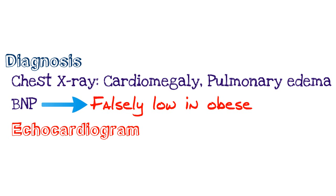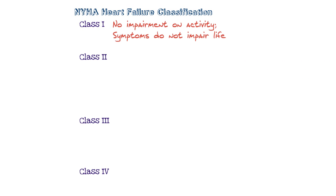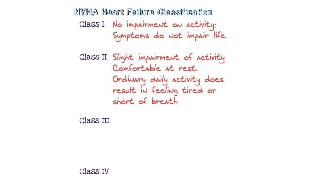Before we talk about treatment, let's talk about classification. There are really two systems. The first is the New York Heart Association Heart Failure Classification, broken up into four classes: 1, 2, 3, and 4. Class 1 patients have no impairment in activity and don't really have any symptoms that affect their lives. Class 2 patients have slight impairment in activity but are generally comfortable at rest; ordinary daily activity results in feeling tired and short of breath, but they're still able to do some activity.